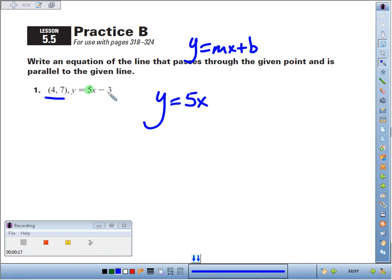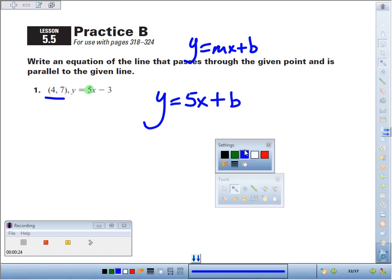This equation has a y-intercept of negative 3, not this one. We have to find the new y-intercept. How are we going to do it? Well, we know a point that's on the graph. This point has to work in the equation.